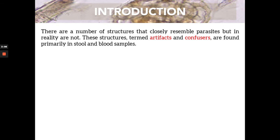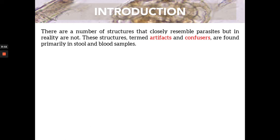What are artifacts and confusers? These are structures that can be found in your specimen — mostly in your stool and blood samples — that may mimic or look like parasites, but in reality they are not parasites. The name itself, confusers, because it can make you confused and make your examination difficult.